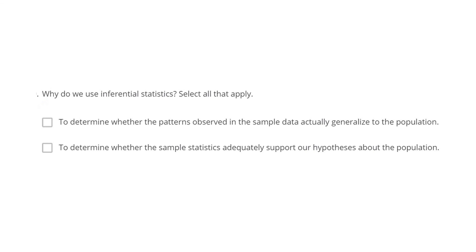Next question: Why do we use inferential statistics? Option A: to determine whether the patterns observed in the sample data actually generalize to the population. Option B: to determine whether the sample statistics adequately support our hypothesis about the population. The correct answer is both of them. Inferential statistics is about taking patterns from sample data and inferring whether the same holds for population data, which requires hypothesis testing. Null hypothesis means whatever pattern we observe in sample statistics, the same will be observed in population; alternative hypothesis says it will not.